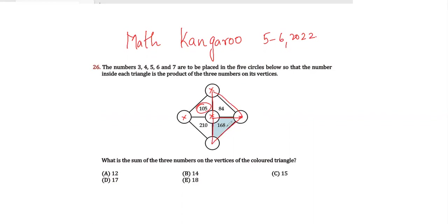These three circles have to equal 168, and so on. Now where do we start this question? If you see, this particular circle is common to all the triangles. So what does this mean? This particular digit that we will be placing here has to be a factor of all these numbers.